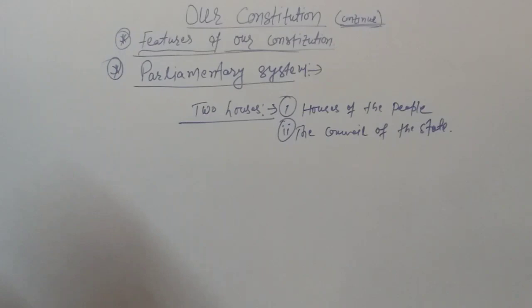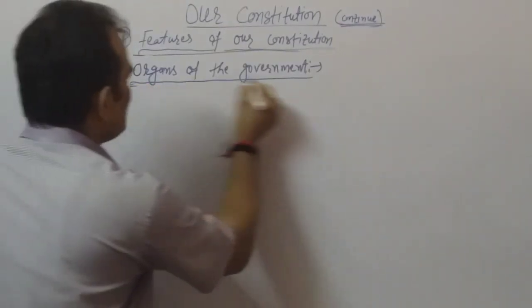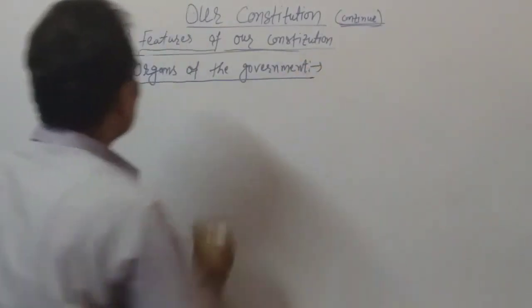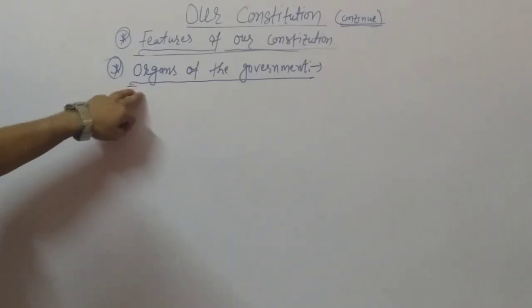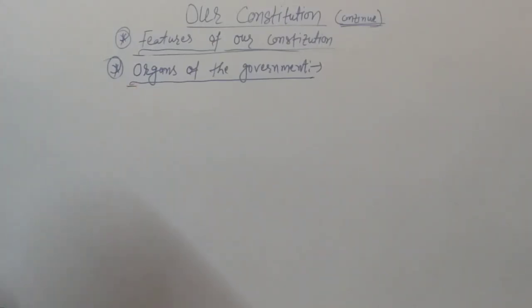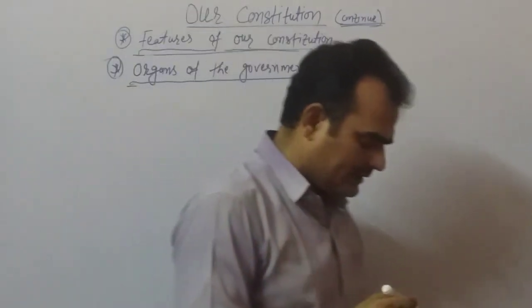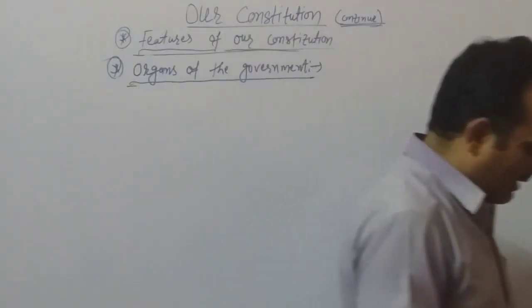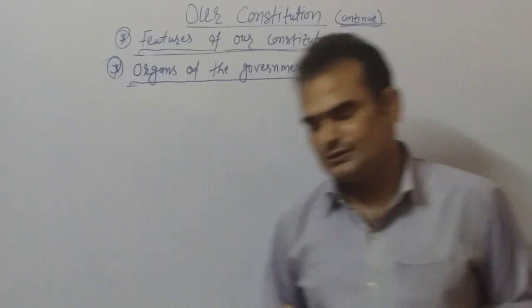The next point we discuss is the organs of government. We know that there are three main branches of the government.